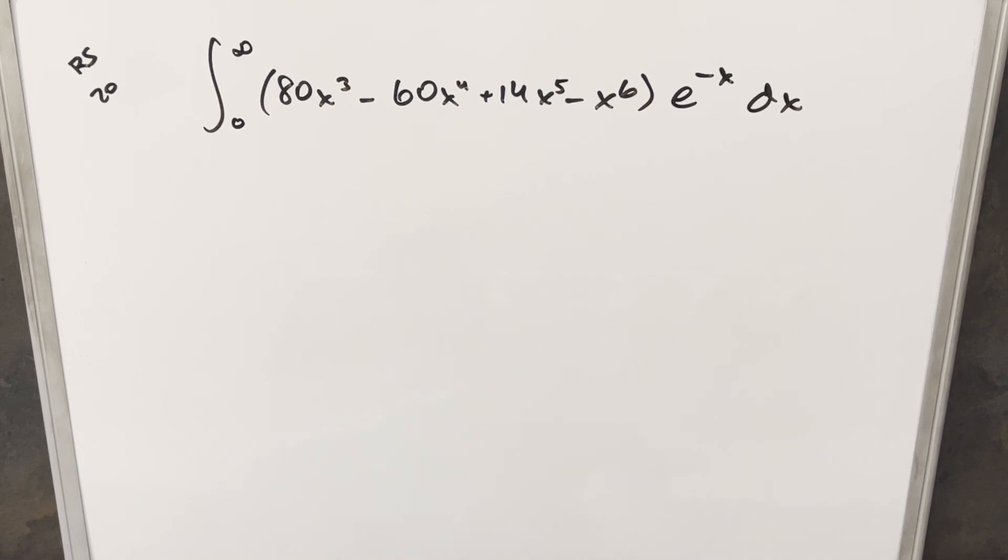Okay, we've retained another integral from the MIT Integration Bee 2024. This was regular season number 20. We have the integral from 0 to infinity of 80x³ minus 60x⁴ plus 14x⁵ minus x⁶ all times e^(-x) dx.